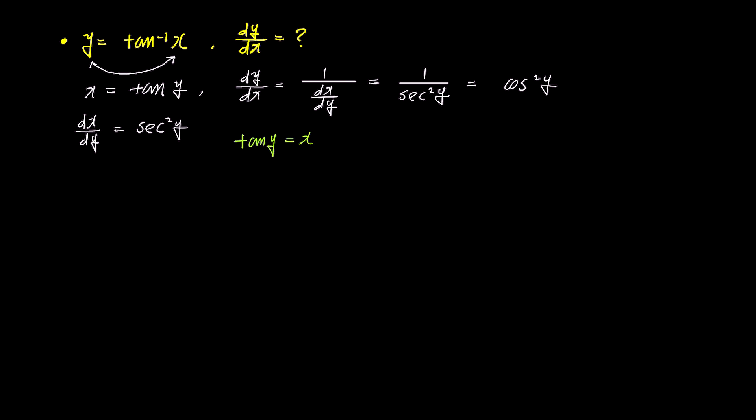Using tangent y is x, we express the right side x as x over 1. Drawing the right-angled triangle with the angle y, the opposite side as x, and the adjacent side as 1, we can apply the Pythagorean theorem. The hypotenuse is then square root 1 plus x squared.